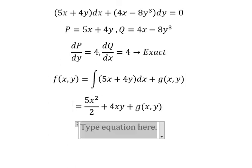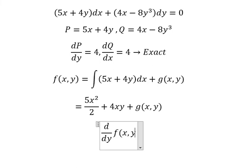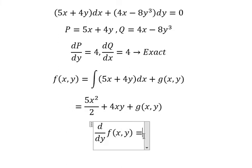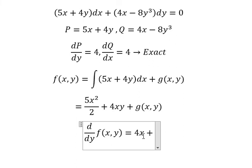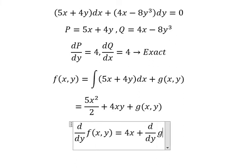We need to do the first derivative of F with respect to Y. This one we don't have Y, so you get about zero. First derivative of Y we have number one, so we have four X, and we have D over DY of G(x,y).